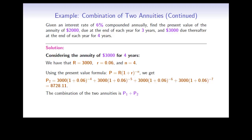The combination of the two annuities — three years of $2,000 followed by four years of $3,000 — is P1 plus P2 as calculated above, which amounts to $14,074.13. Therefore, the present value of this combined annuity is $14,074.13.